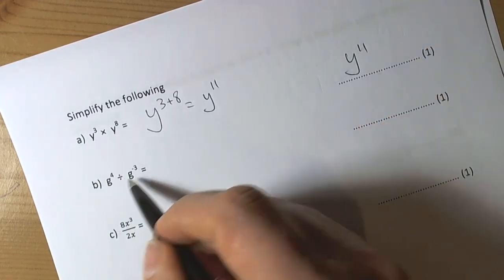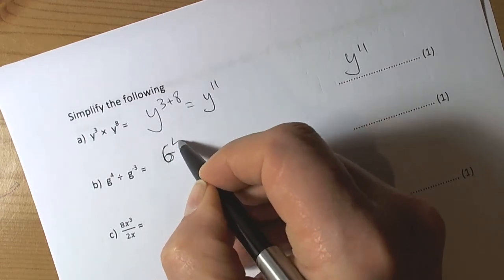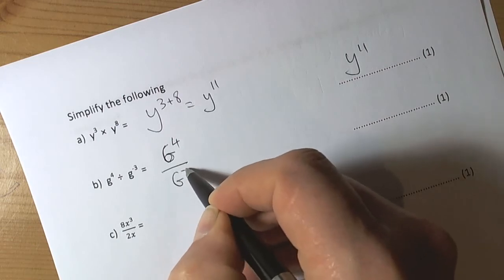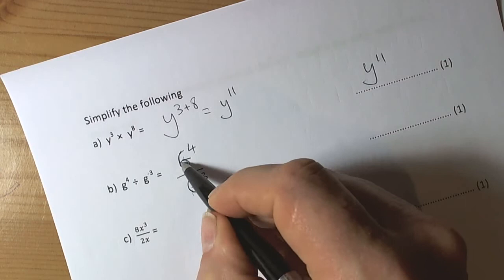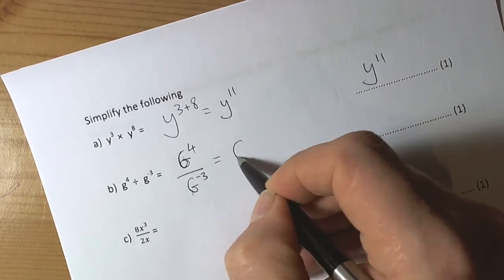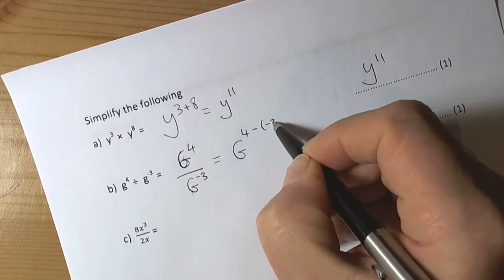Here we're dividing, so we've got to remember that that really means we're doing g to the power of 4 divided by g to the power of negative 3. And when we're dividing with the same bases, then we subtract the powers, so this becomes g to the power of 4, take away negative 3.